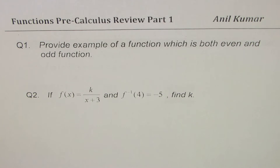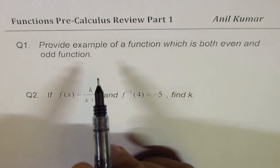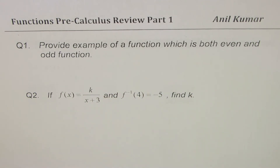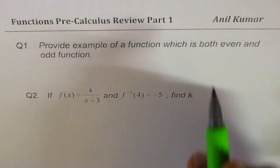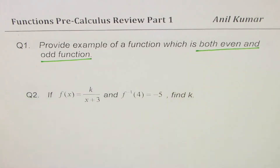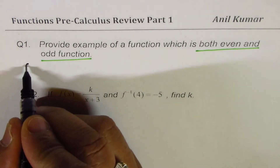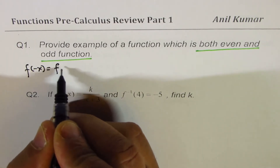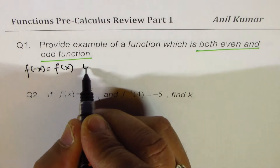Question number one: provide an example of a function which is both even and odd. I hope you remember what an even function and odd function are. If f(-x) equals f(x), we say this is an even function.